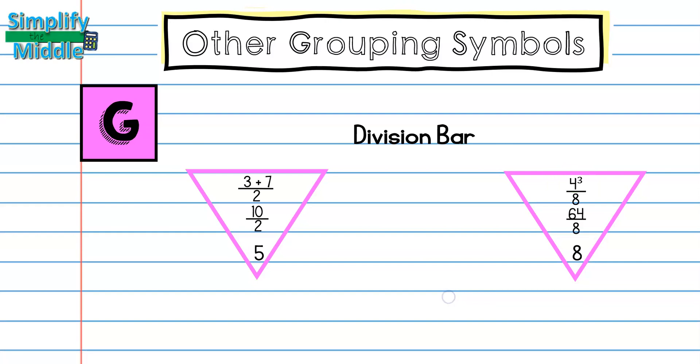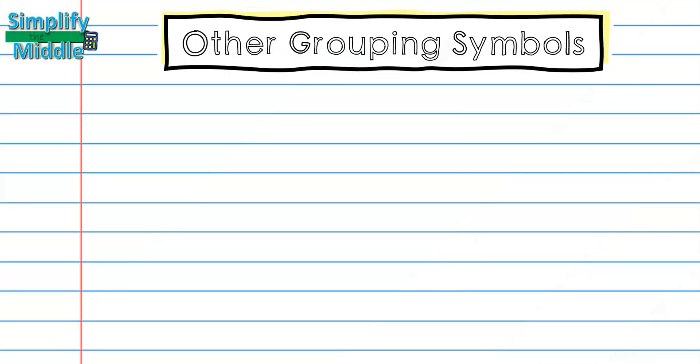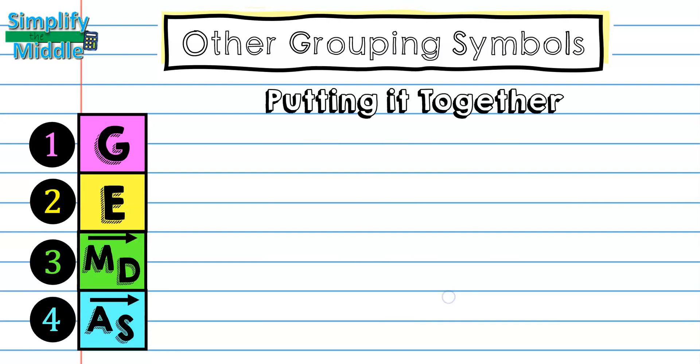So now that we've looked at those two things separately, let's put everything together. Remember I always work grouping symbols, then exponents, then multiplication/division, then addition/subtraction, and remember that these operators need to be worked left to right. Also I might not have every single operator inside each problem, so if I don't have an operator, for instance exponents, I would skip it and go to the next one.